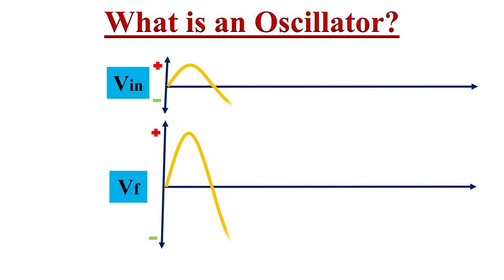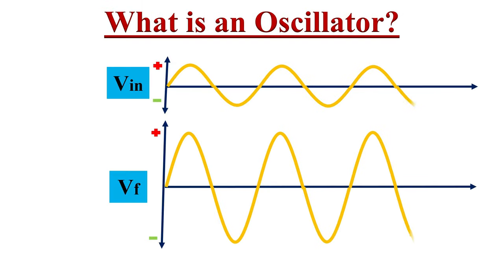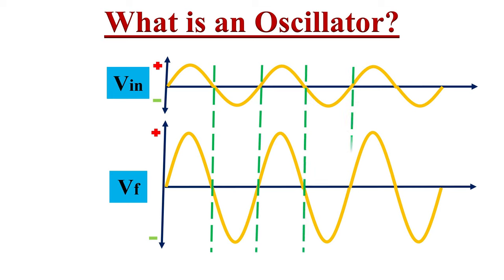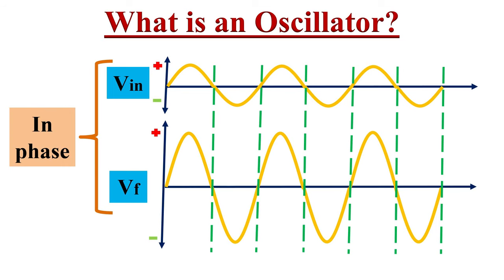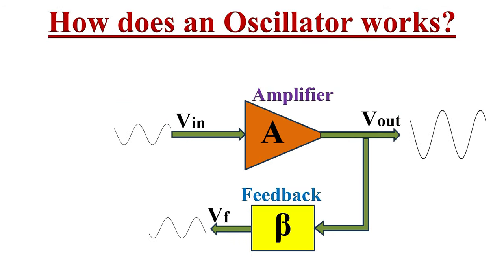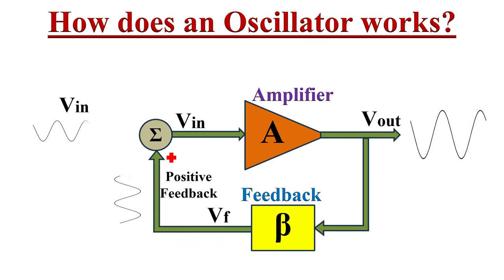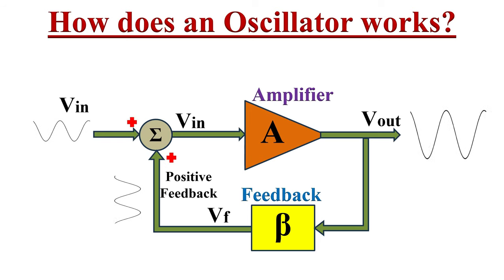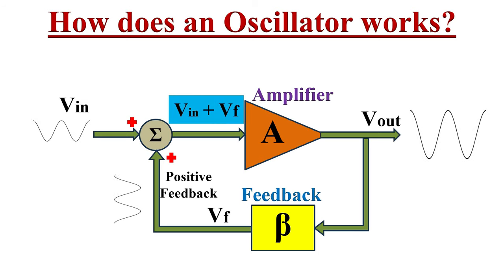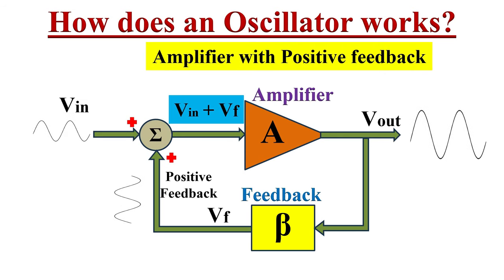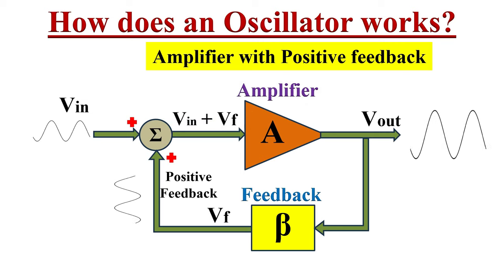Now, if there is zero phase shift between the input signal and the feedback signal's output, then the feedback signal is in phase with the input signal. If we connect this feedback signal Vf to the input signal, we will get positive feedback at the oscillator input. So the input signal becomes Vin plus Vf, and this circuit can be defined as an amplifier with positive feedback.